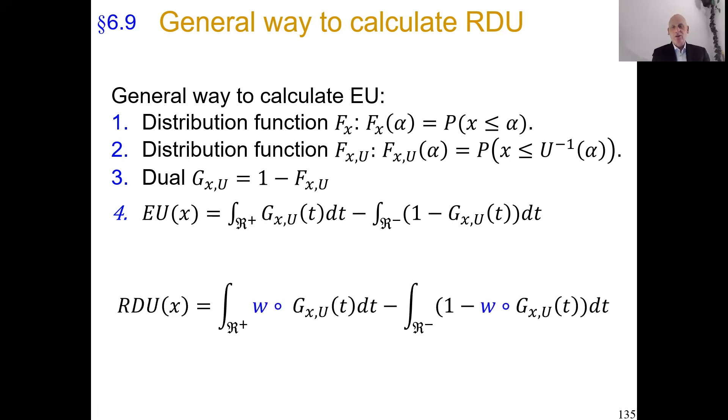And indeed, here is the general formula that is valid for all distributions, random variable x, continuous, discrete, whatever. You simply take the expected utility formula that we already saw, that we already know, and you apply this probability weight function to all the ranks, because that's what rank-dependent does, and you are already home. That's it. This is rank-dependent utility.